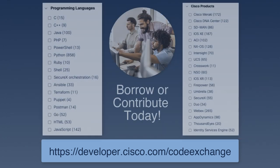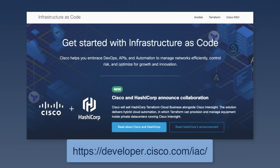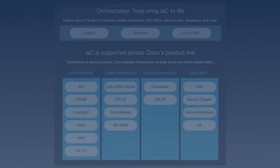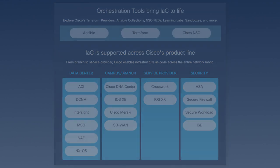At the time of this video, there are 86 Terraform repos on Code Exchange in various languages such as HCL, Python, and Go, and for various technologies such as SD-WAN, AppDynamics, ACI, Data Center, and many more. Visit developer.cisco.com/iac to learn more about Terraform and Infrastructure as Code, including providers, Ansible Collections, NSO NEDs, and how Cisco enables IAC across the entire network fabric.